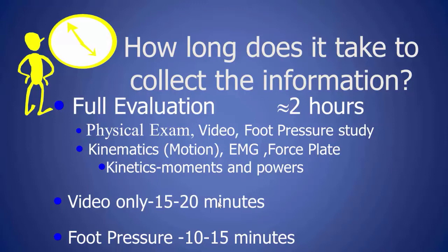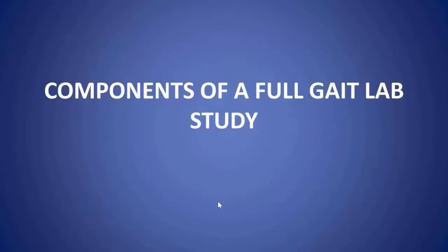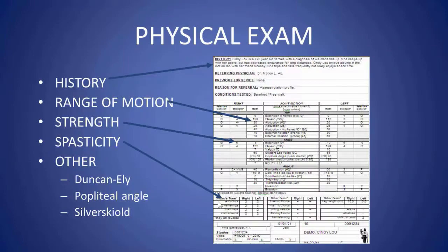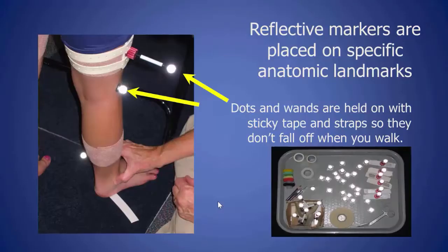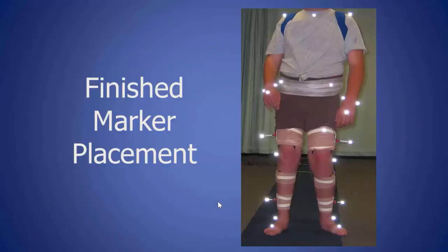Similarly, just the foot pressure study is fairly quick. The components of a full gait lab study start with the matrix, which is done by the physiotherapist before the study, documenting all the physical examination data. Then markers are placed on the limbs and the trunk in a very specific fashion — not necessarily on the centers of motion of the joint, but in very specific spots so that when the computer sees them all, the joint centers can be calculated.